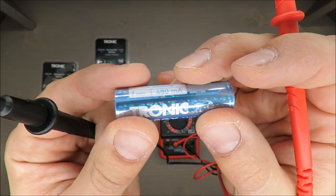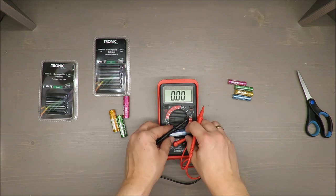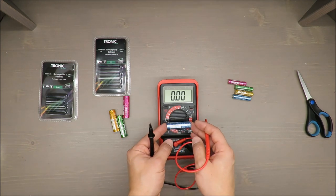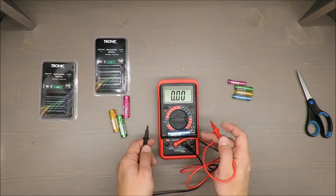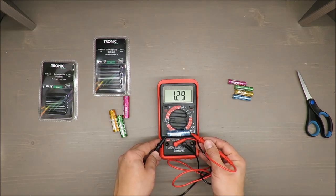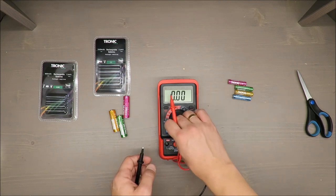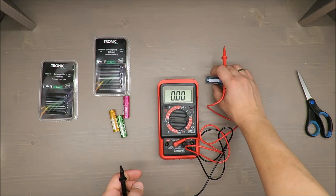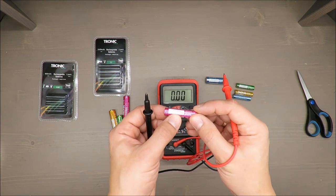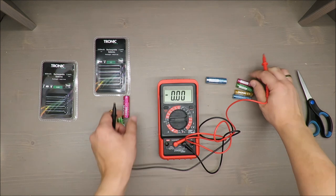And one thing - those batteries, the charging time for the bigger one, for the double A, is seven hours with a 480 milliampere charger. And for the smaller one, also the charging time is seven hours but with 190 milliampere charger.